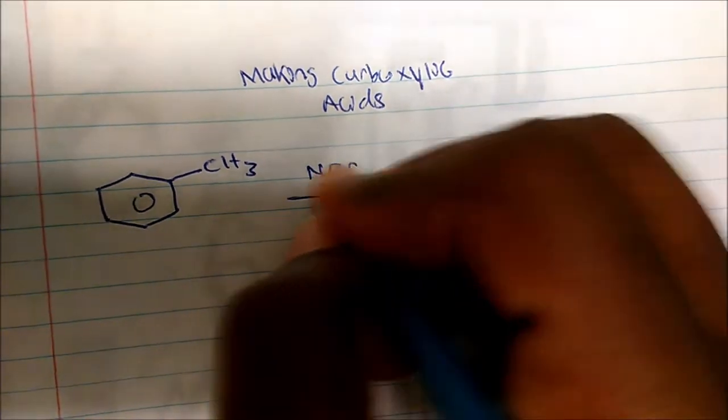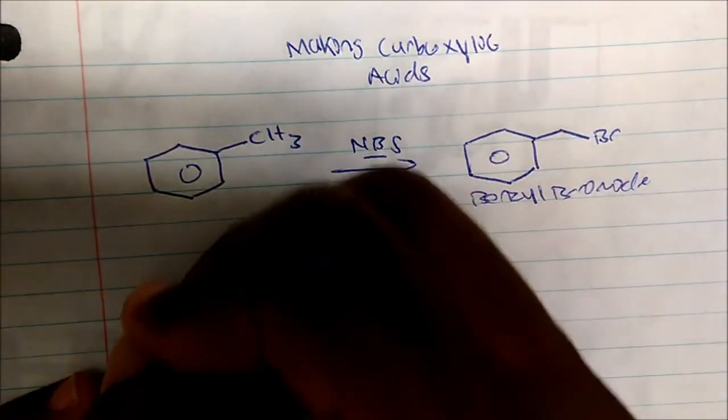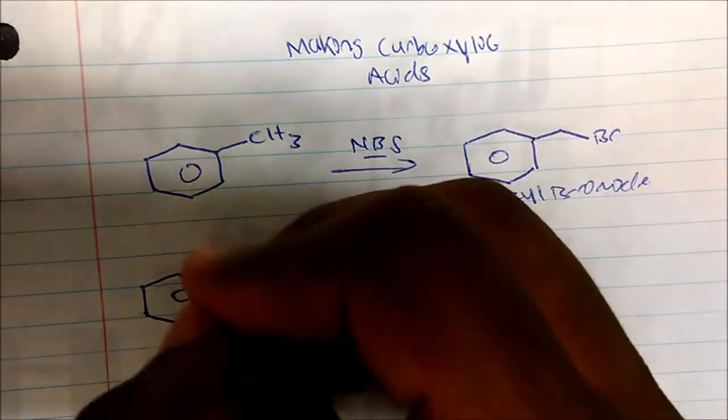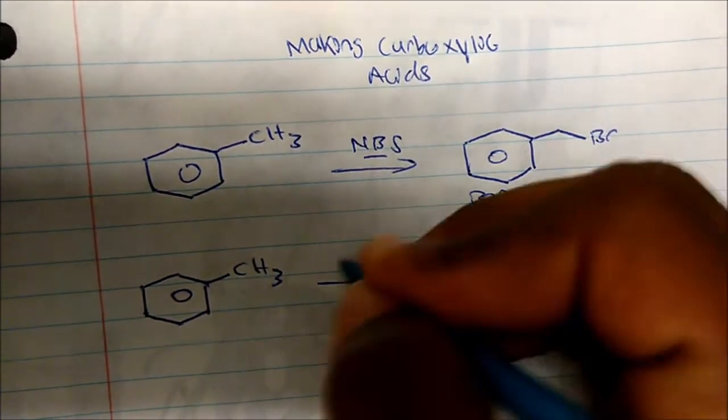Just remember this. Now for the reactions of potassium permanganate, this has to be in delta conditions, which means that we're adding heat.